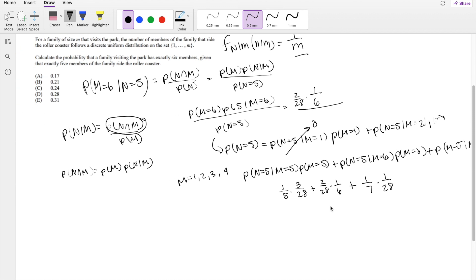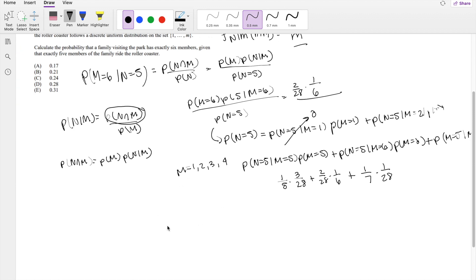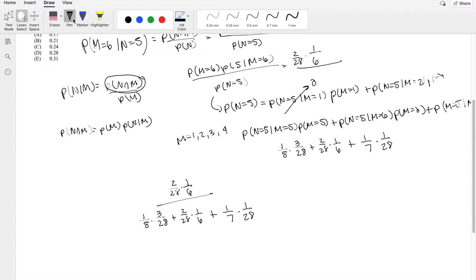Plus n is equal to 5 given m equals 6, that's exactly what we found on the numerator. And finally, when it's equal to 7, it's going to be 1 over 7 times 1 over 28. Okay, that kind of looks really messy but I'll just write it all right here: 2 over 28 times 1 over 6 divided by this number right here. I'm just going to copy and paste real quick.